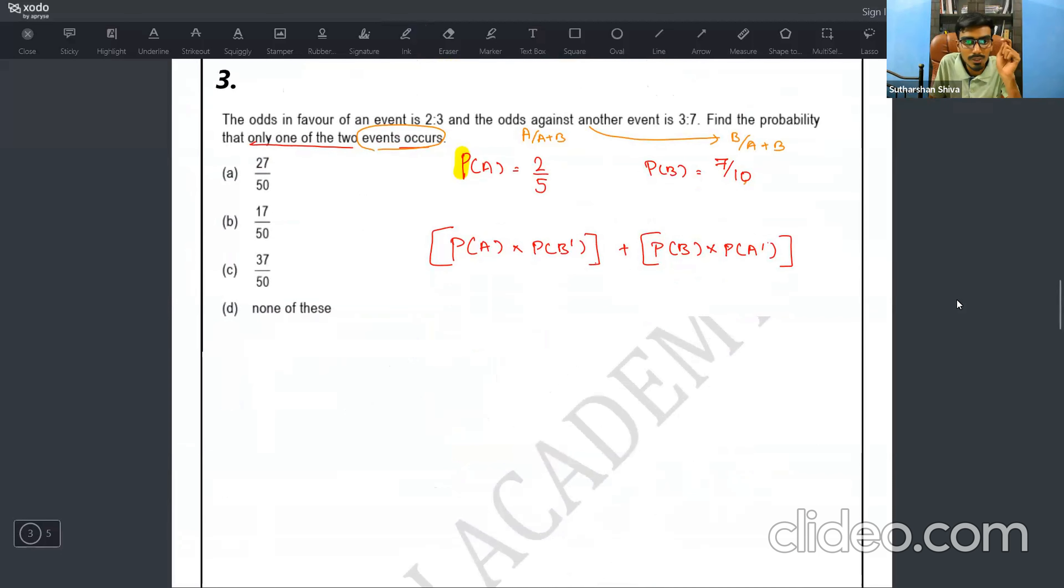Now, question number three. Listen to this question. This is a very important question. Odds in favor of an event is two by three. Odds against another event is three by seven, three is to seven. Find the probability that one of the two events occurs. One of the two events occurs means P of A happened, P of B dash should only happen. P of A dash happened, P of B should happen. So whenever it is odds in favor, you will use the formula A divided by A plus B for P of A.